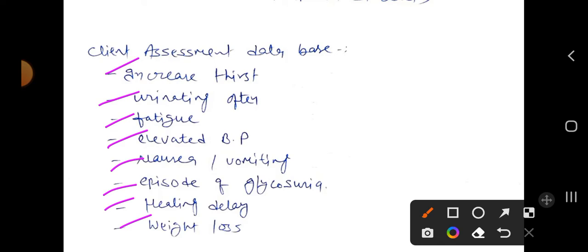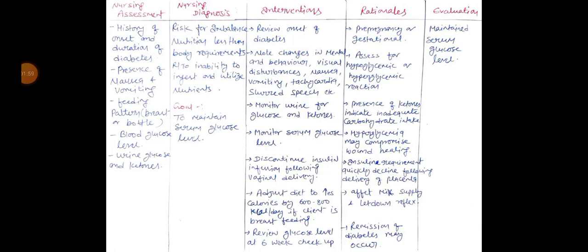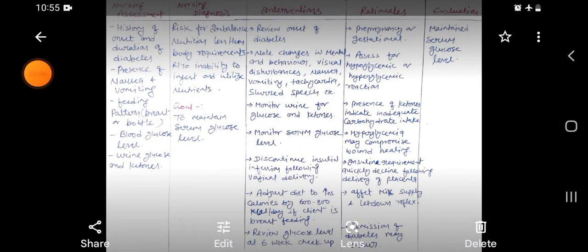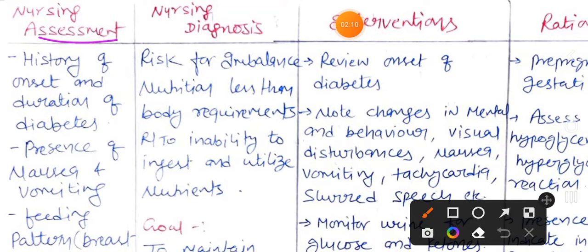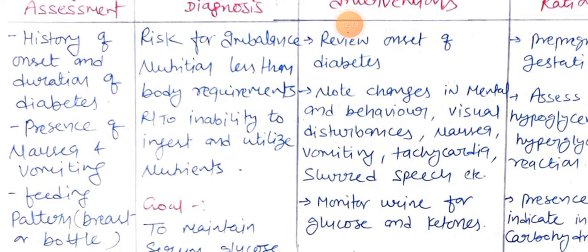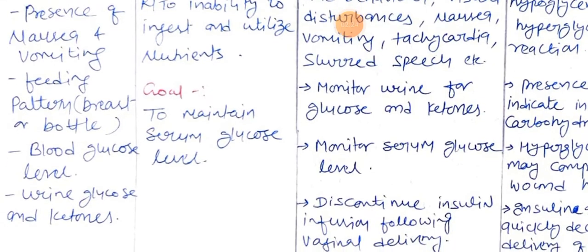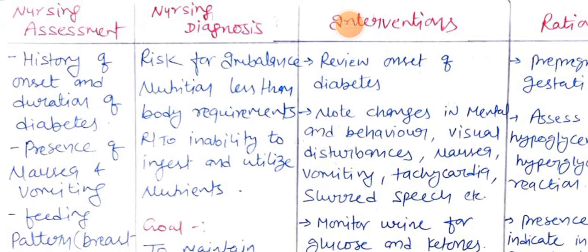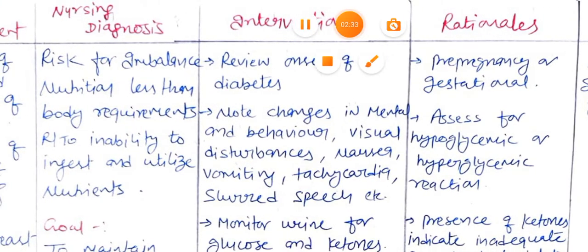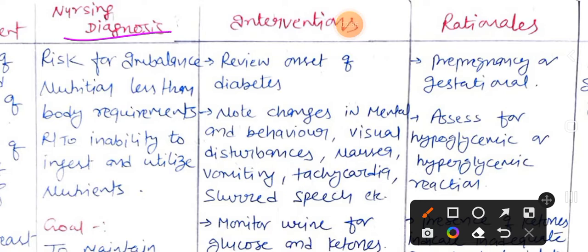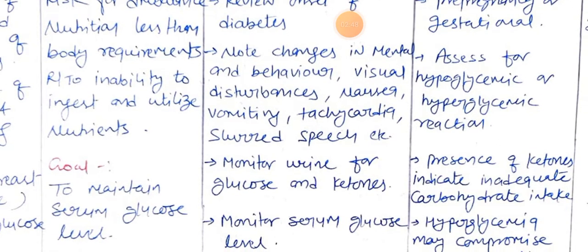This is the first nursing care plan on postpartum diabetes mellitus. Nursing assessment includes: history of onset and duration of diabetes, experience of nausea and vomiting, feeding method — breast or bottle — blood glucose level, urinary glucose and ketones. On the basis of this assessment, the nursing diagnosis is: risk for imbalanced nutrition, less than body requirements, related to inability to ingest and utilize nutrients. The goal for this diagnosis is to maintain serum glucose level.